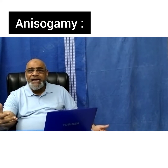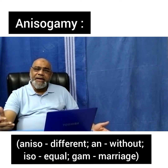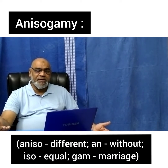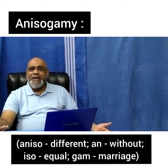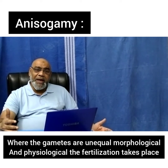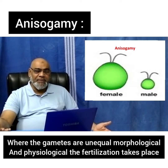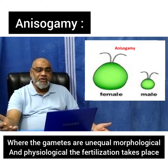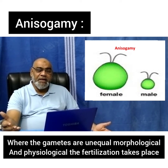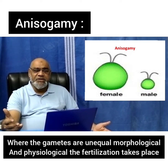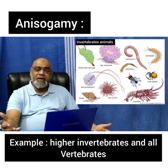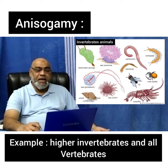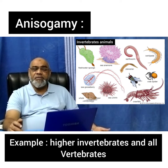What is anisogamy? Aniso means different — 'an' means without, 'iso' means equal, 'gam' means marriage. Here the gametes are unequal morphologically and physiologically, and fertilization takes place between them. Examples include higher invertebrates and all vertebrates.